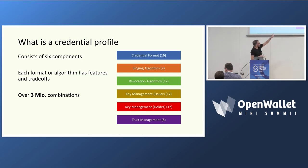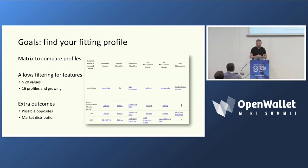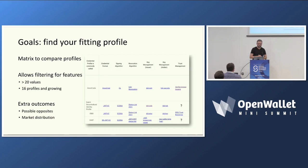You can see on the right-hand side how many options we have collected so far. If you combine all of them, it's three million combinations. So it's an emerging space. What we did is put all this in a matrix that people can use as a tool — I'm going to show you the matrix in a second — so you can look at what existing profiles are there.